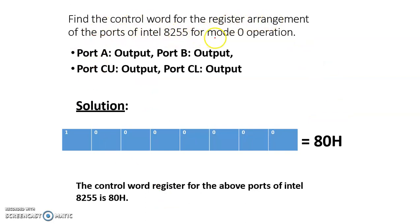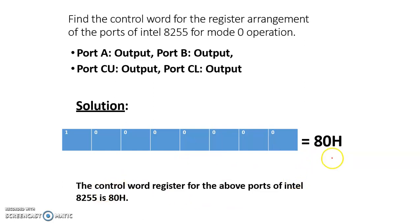For a second example — mode 0 operation with Port A output, Port B output, Port C upper output, and Port C lower output — all ports configured as output. The control word for this configuration is 80H. The program uses MVI A, 80H followed by OUT 03H (for the second unit, the control word register address would be adjusted accordingly, e.g., D8-DB range for the second unit).